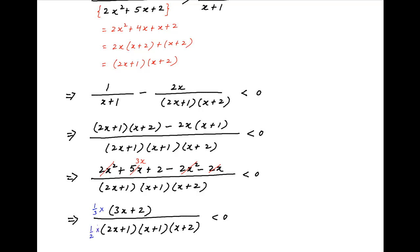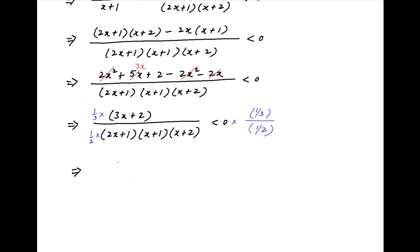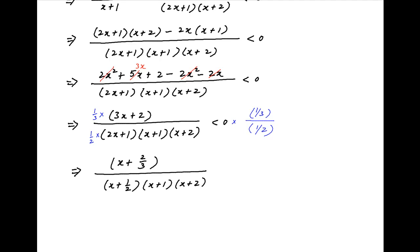Multiplying the left-hand side by 1/3 and dividing by 1/2, and doing the same on the right-hand side, we get (x plus 2/3) divided by (x plus 1/2)(x plus 1)(x plus 2) is less than 0.